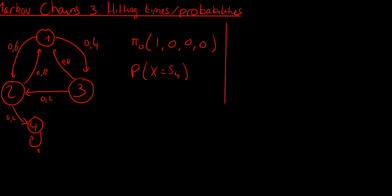We write down hitting time as follows: the hitting time starting from 1, wanting to go to 4 — I want to know what the probability is that my frog will return to me. If I start in state 1, it is 0.6 multiplied with the hitting time of going from state 2 to 4, because the transition from state 1 to state 2 has a probability of 0.6, and then it's the hitting probability from 2 to 4, plus the hitting probability if I go to state 3. These are all the possibilities.